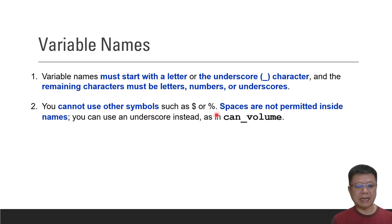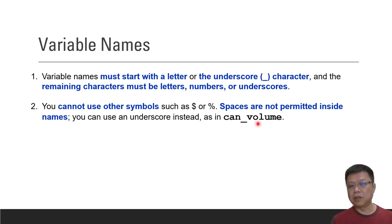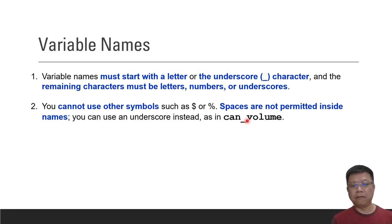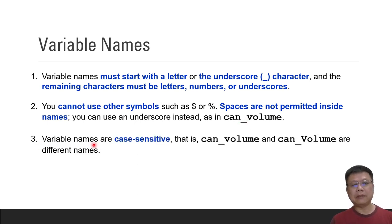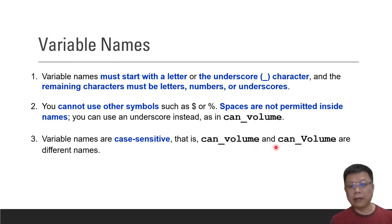The second rule is you cannot use other symbols like dollar sign or percentage sign, and spaces are not permitted inside the name. For example, if you have 'cane volume' and want a space, replace it with an underscore. The same applies to a name like 'Muhammad Ali' — replace the space with an underscore. The third rule is that variable names are case sensitive, so if you declared a variable as 'cane_volume' in all small letters, always use the same casing when you refer to it.